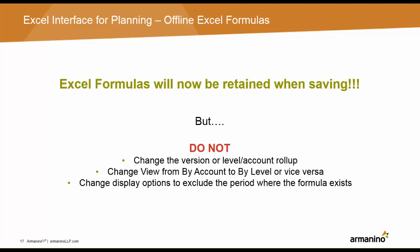And a huge win — you can now retain Excel formulas in offline adaptive planning models and push the resolved number to the server. Once you apply an Excel formula to a cell in a sheet, when you submit your changes, only the resolved value is saved back to Adaptive, not the Excel formula. The formula is retained in the cell locally. Note that this only applies when there are no changes that will discard the formula, including when you switch versions, levels, or accounts, or change the view from View by Account to View by Level, or if you change the display options to exclude the intersection where the formula exists.